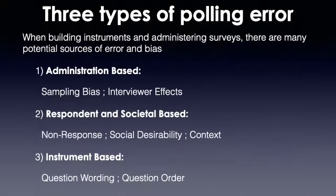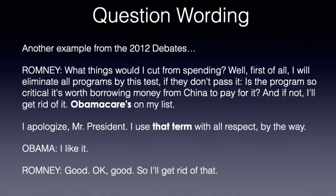Now we turn to the third and final type of polling error: instrument-based errors. These are errors caused by how the survey instrument is written — either bad question wording or question order that leads respondents to be more likely to choose certain answers. These errors bias results through the survey instrument itself.